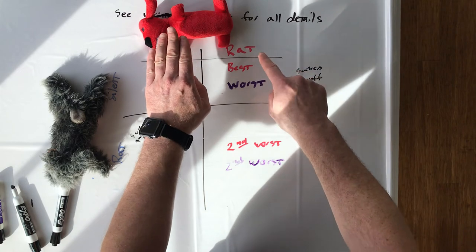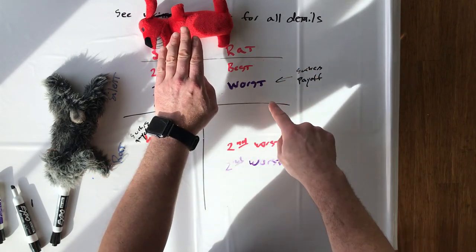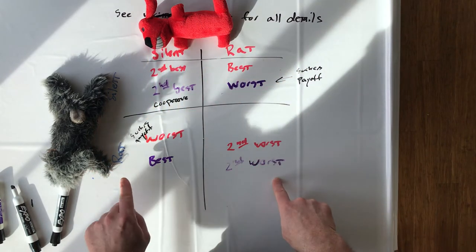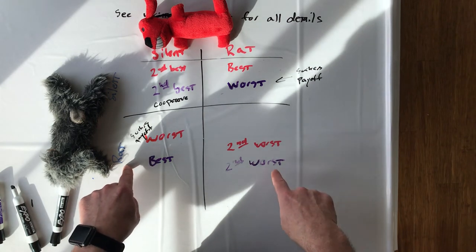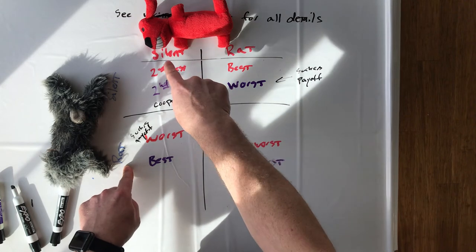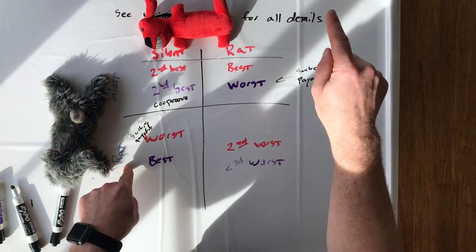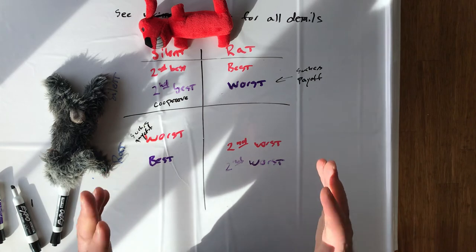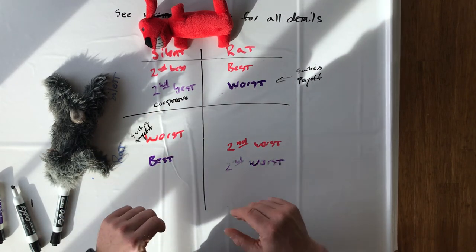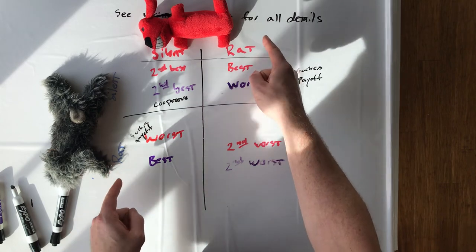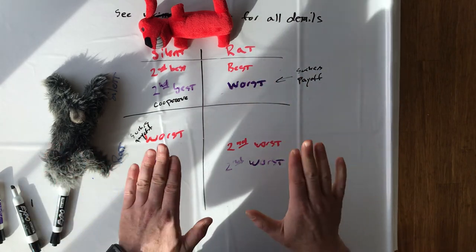So imagine that Red Dog is now going to rat. If Red Dog is going to rat, then that means Rabbit is choosing between her worst and her second worst, and the thing that gets her second worst is to rat, so she's going to rat. So in both scenarios, if Red Dog is silent, she should rat. If Red Dog rats, she should rat. So that means ratting is strictly dominant. No matter what the other party does, you should always do the same thing, which in this case is rat each other out.